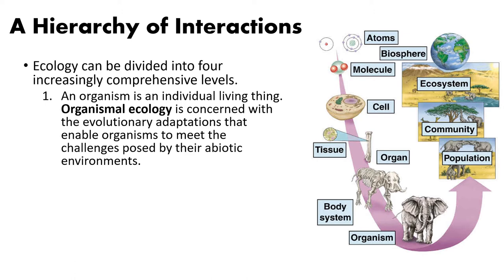At the organismal level, we look at the interface between the organism and their environment. For example, a cactus is adapted to live in a very dry environment. The abiotic challenges are very little water and high heat, and those have shaped what the cactus looks like today, allowing it to persist because of its different adaptations.